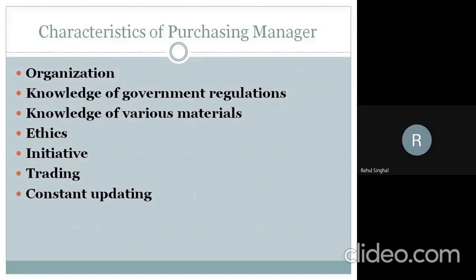A company requires lots of materials and consumables — stationery, raw material for production, fuel, spare parts — as well as services from technical experts to repair machinery or consultants to advise on the Factories Act. You need to acquire various kinds of goods and services, and no single supplier will supply everything, so the purchasing manager must coordinate with various suppliers.